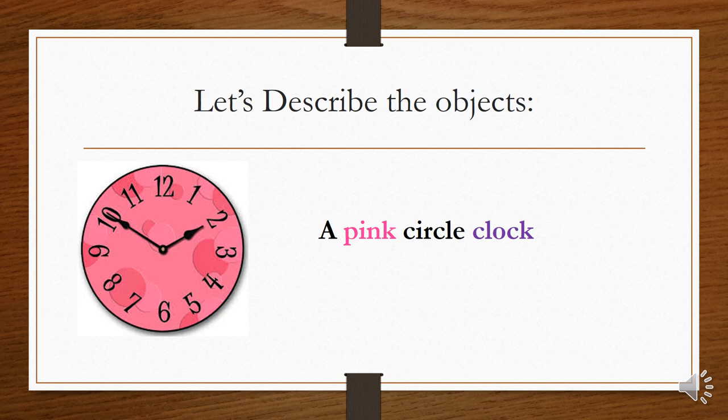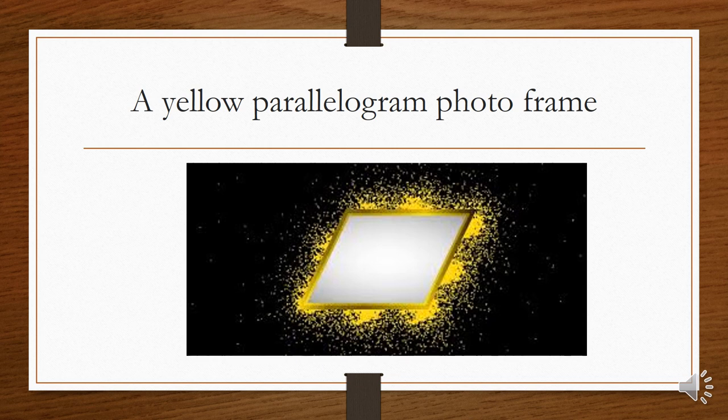Good, very good. Next, this is the parallelogram and it's a photo frame, and it's in yellow. So we can describe the photo frame by saying it's a yellow parallelogram photo frame. Let's read it together: a yellow parallelogram photo frame.